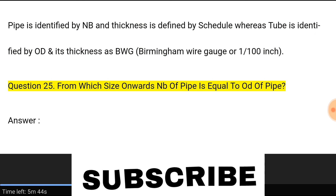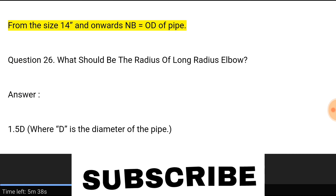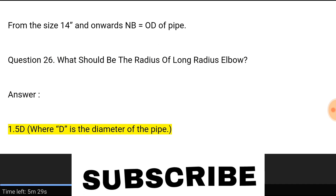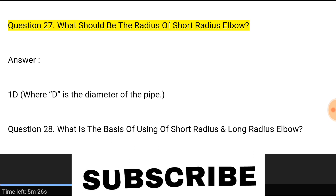Question 25: From which size onwards is NB of pipe equal to OD of pipe? Answer: From size 14 inches and onwards, NB equals OD of pipe. Question 26: What should be the radius of long radius elbow? Answer: 1.5D, where D is the diameter of the pipe. Question 27: What should be the radius of short radius elbow? Answer: 1D, where D is the diameter of the pipe.